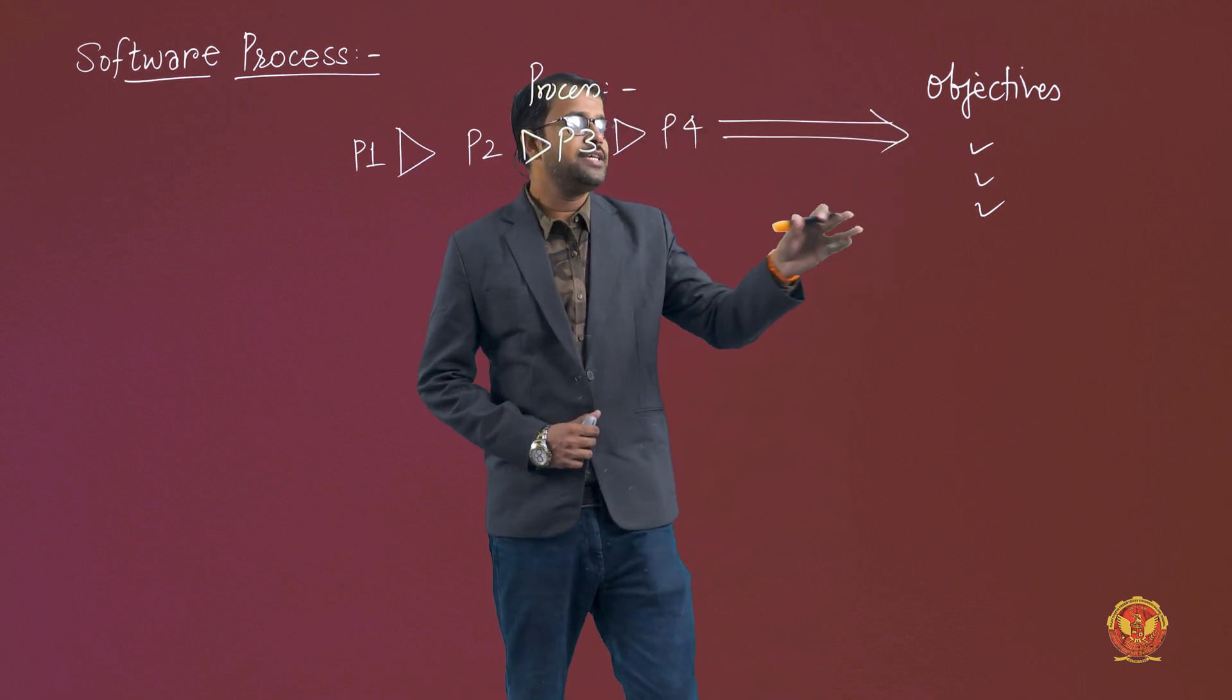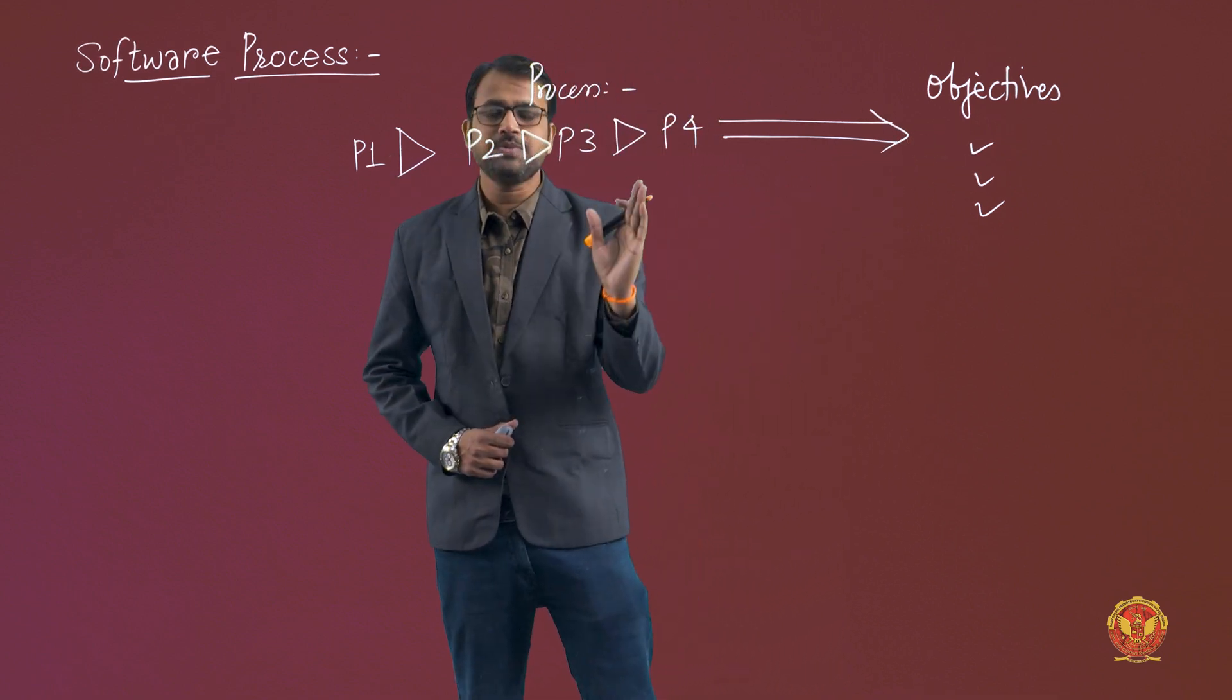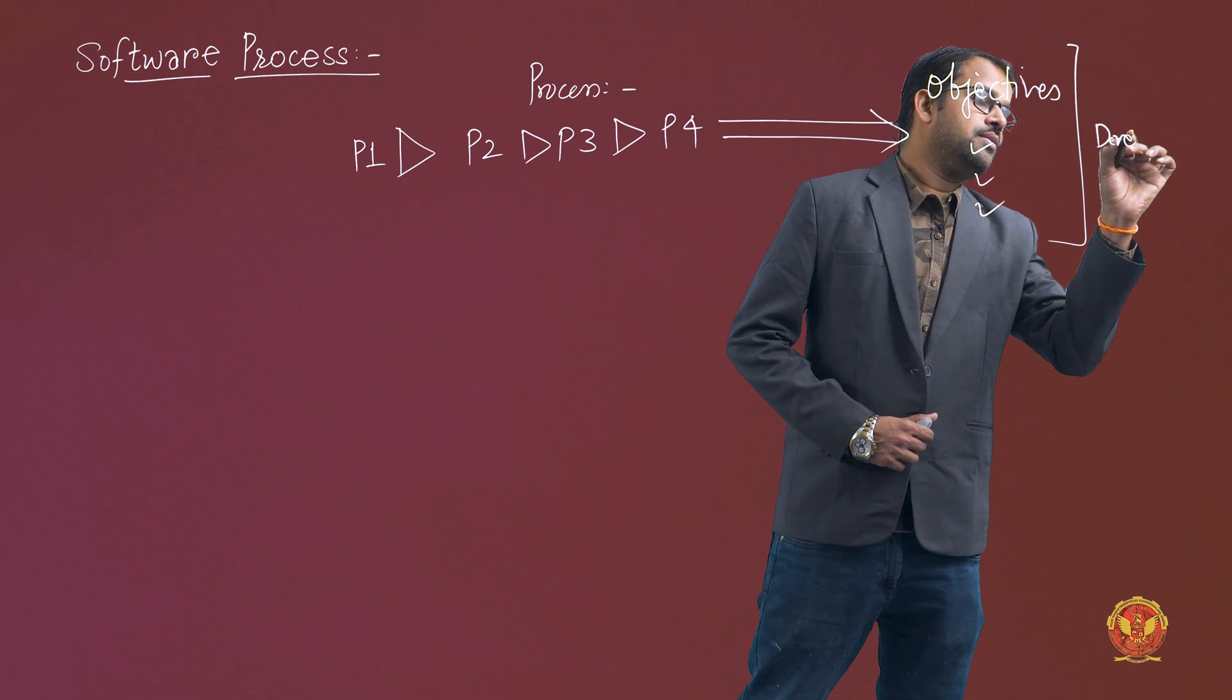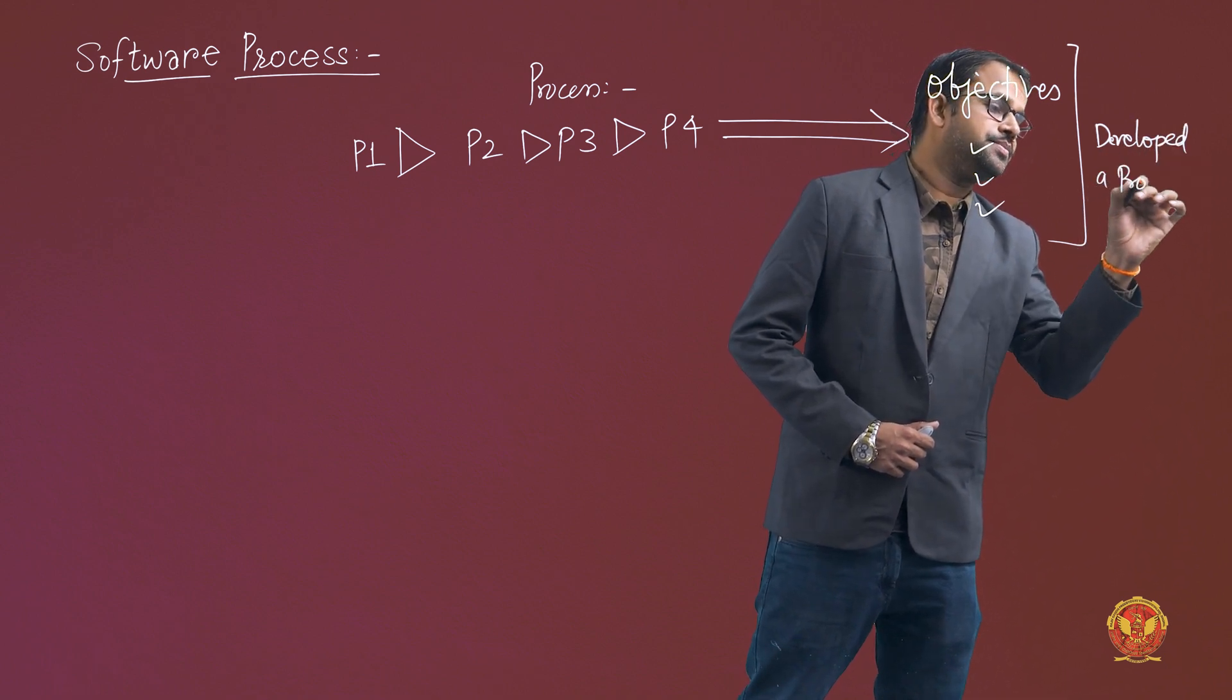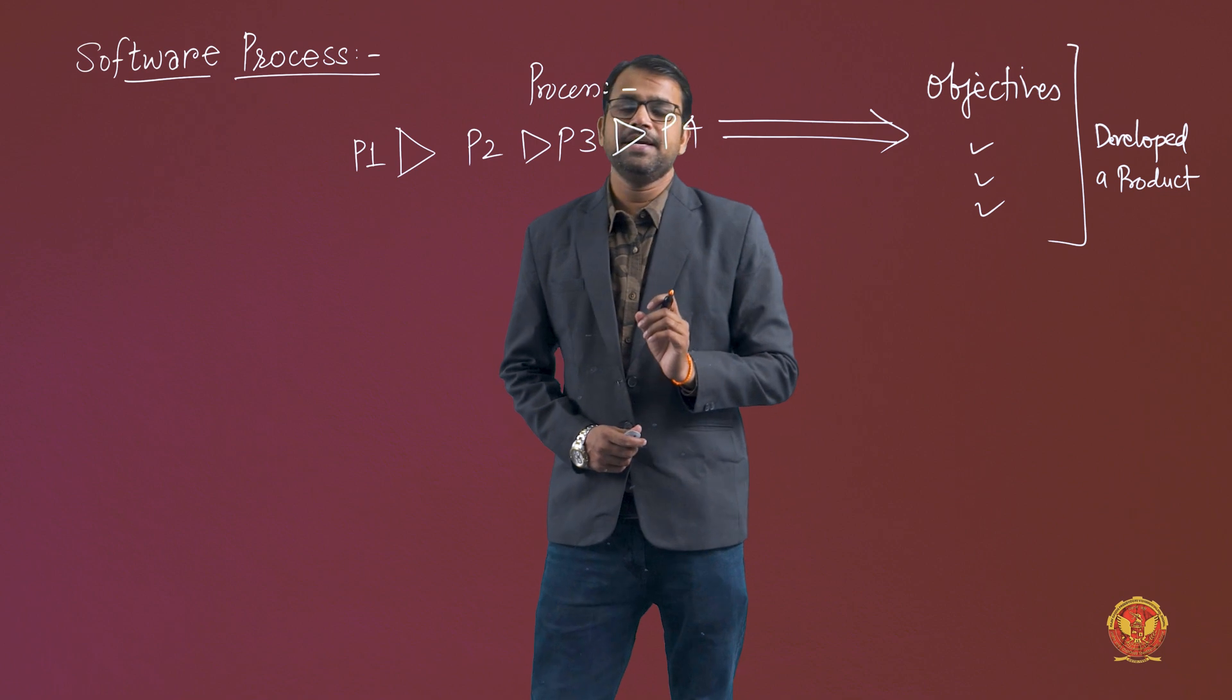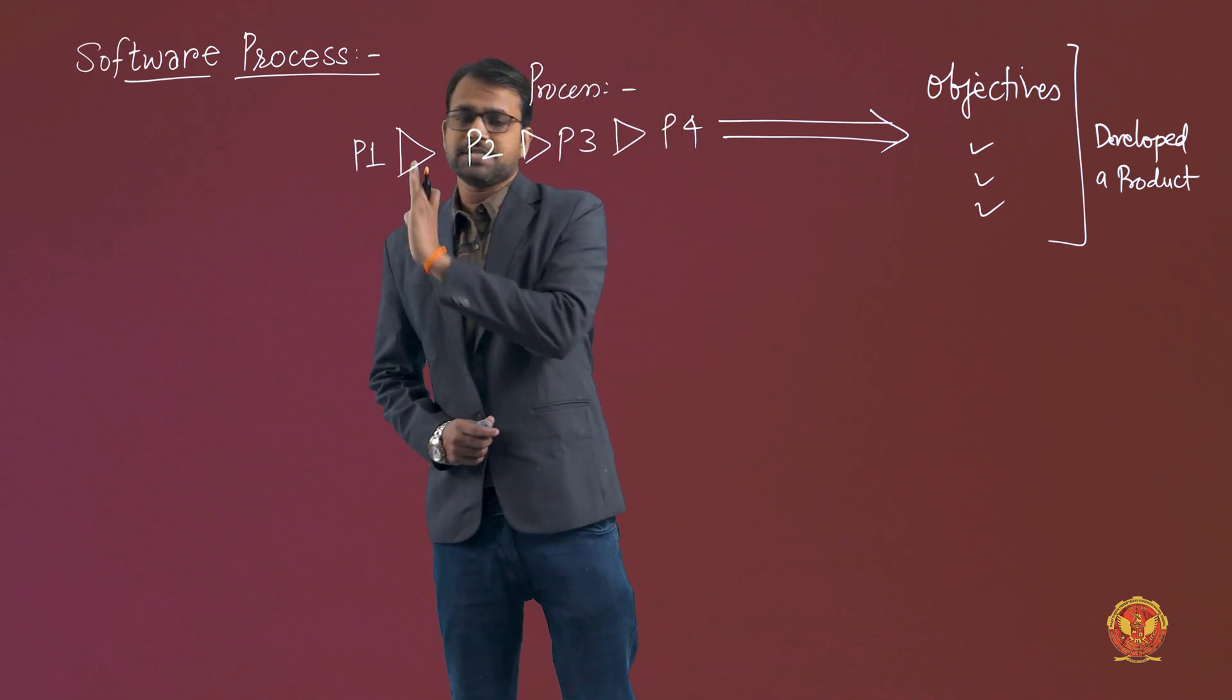And as we complete these objectives, as we accomplish these objectives with the help of these process steps, then we can say that we have developed a product. So the main thing that has to be in mind is systematic coordination of these processes together to accomplish that particular task.